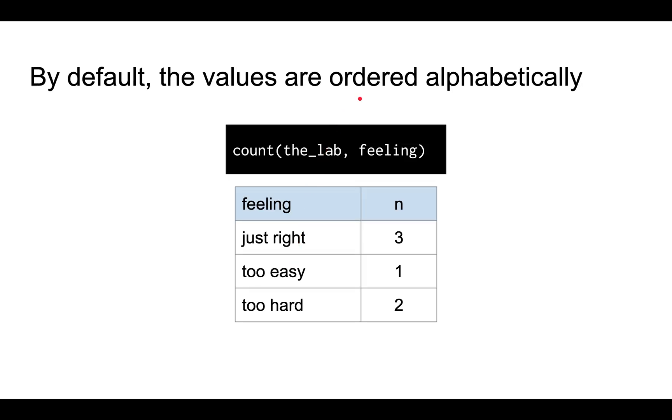By default, factor or character columns are ordered alphabetically. So let's say you count the values of the feeling column. You notice that just right is alphabetically before too easy is alphabetically before too hard.